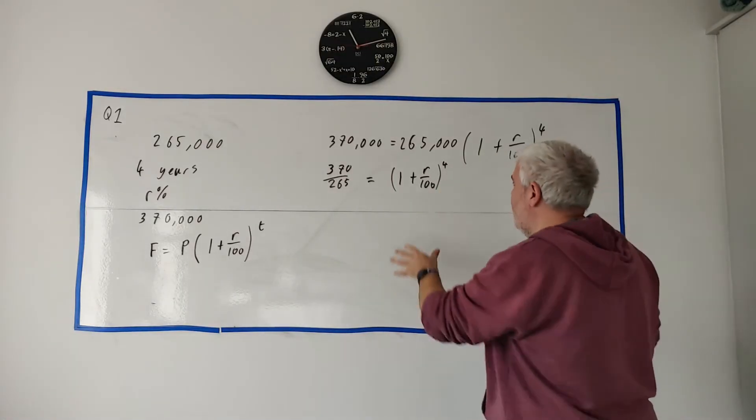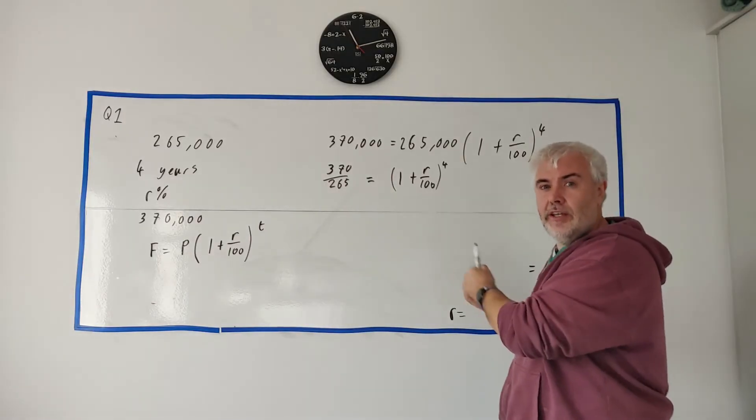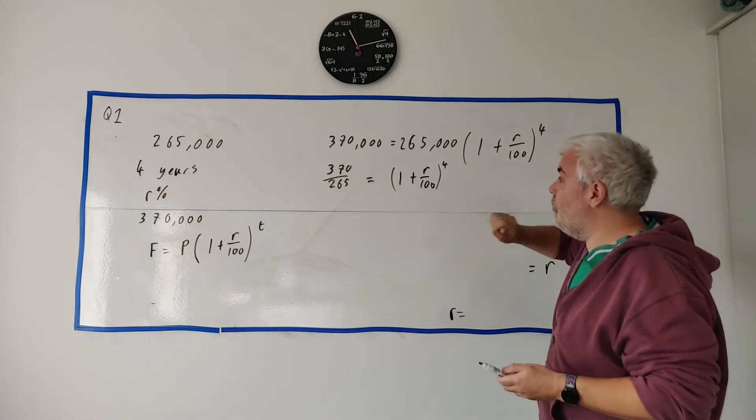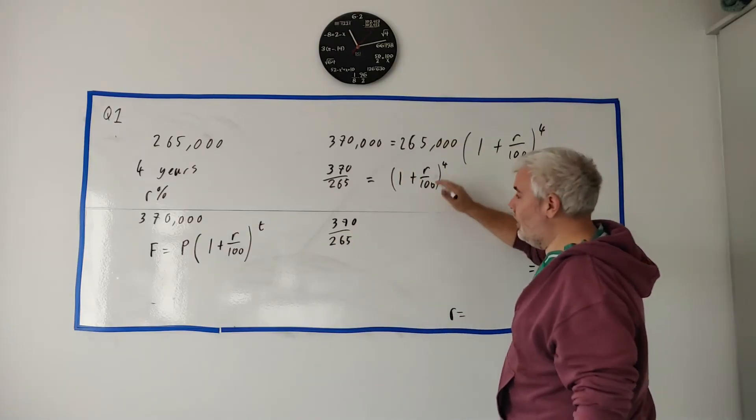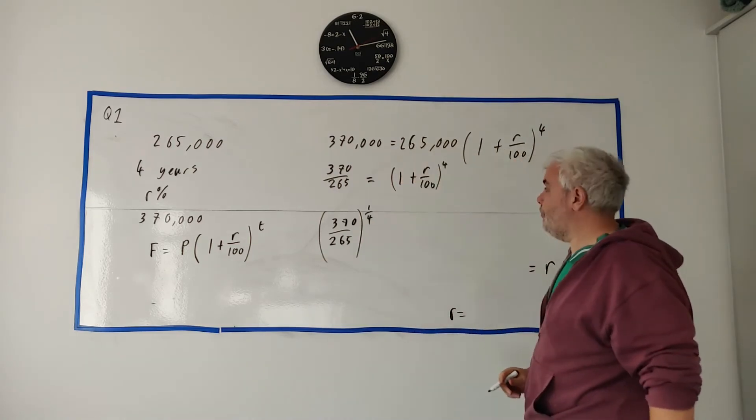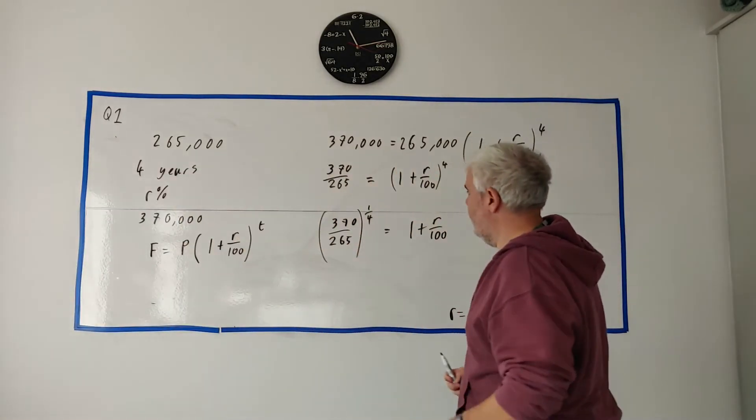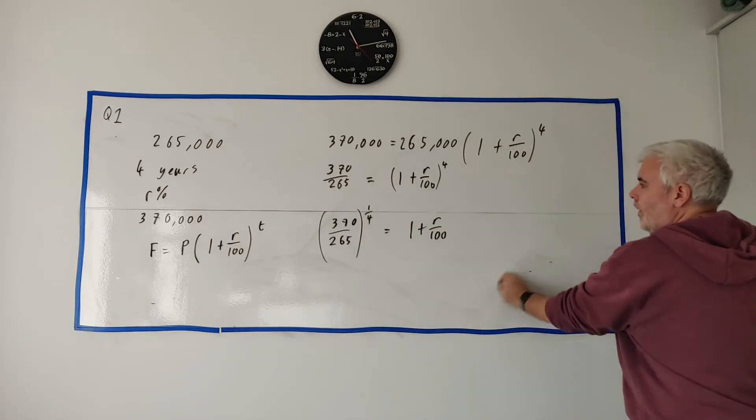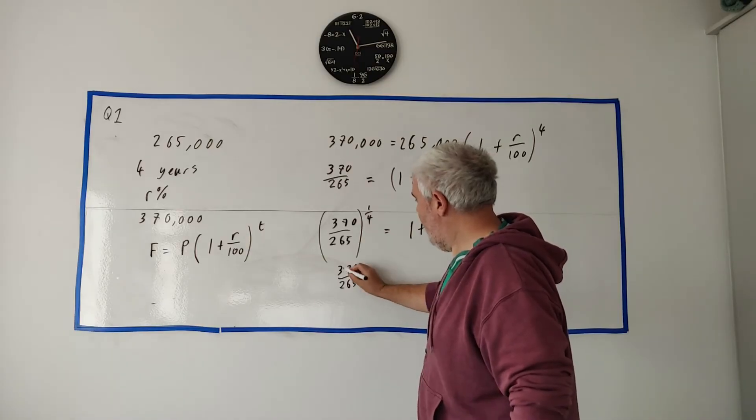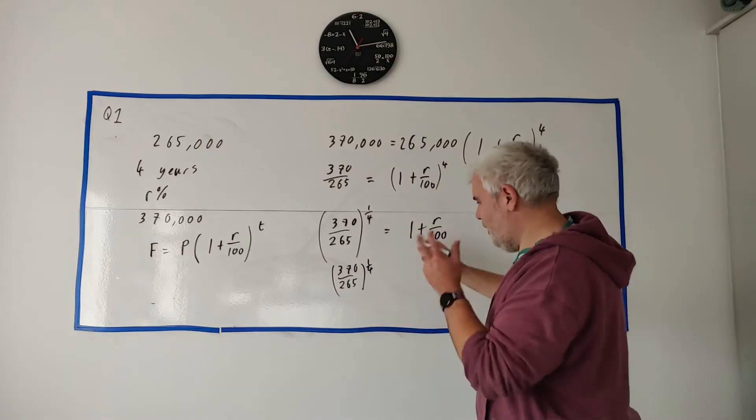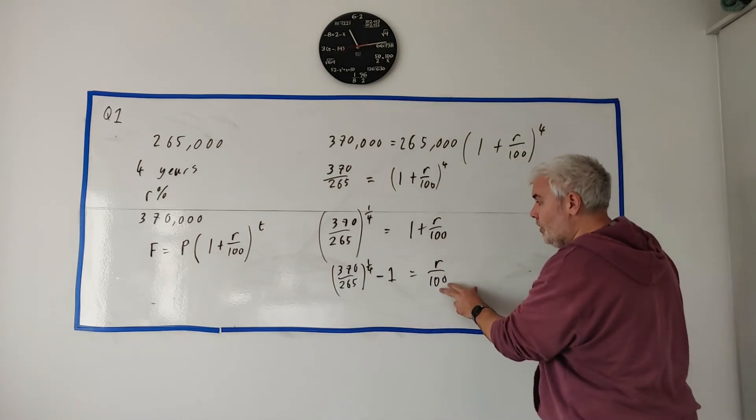The power of 4. When something multiplies we do the opposite, divide. When something adds we do the opposite, take away. In this case 4 to the power of, we need to do the opposite of the power of 4. And that's a bit of practice. The opposite to the power of 4 is to the power of 1 over 4. And that equals 1 plus R over 100. 1 acts on everything, so let's just take 1 away from both sides. 370 over 265 to the power of 1 over 4 minus 1 is equal R over 100. And then get rid of the 100. Multiply both sides by 100.